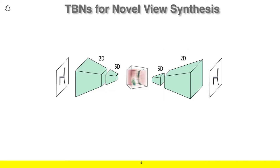In essence, a transformable bottleneck network, or TBN, is an encoder-decoder framework with an implicit volumetric representation of the image content as its middle layer. You can see an example of this here.